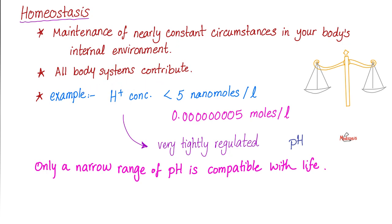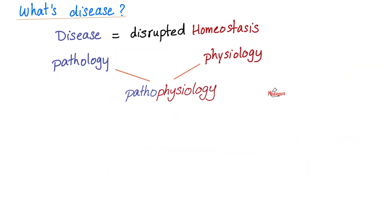You can technically argue that hemostasis is a subtype of the broader term homeostasis. Homeostasis is not the maintenance of a perfectly constant environment — it's nearly constant circumstances in your body; there is normal fluctuation in nature. All body systems contribute to homeostasis, including the respiratory system, cardiovascular system, excretory system, etc. For example, your lungs and kidneys tightly regulate your blood pH. Therefore, pathology or disease could be defined as disrupted homeostasis.